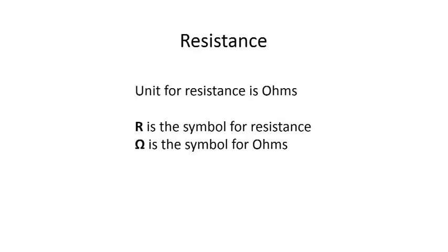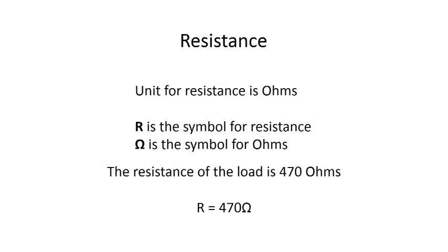For resistance, the unit is ohms. R is the symbol for resistance, and Ω is the symbol for ohms. You could write R equals 470 ohms. Just as we said the voltage across or the current through, you would say the resistance of a component.